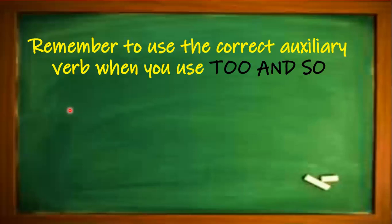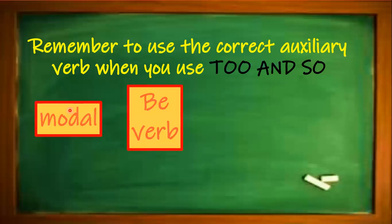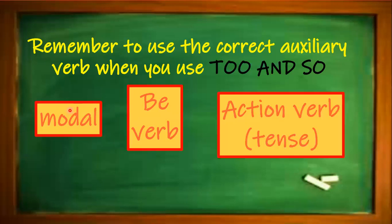Pay attention here — remember to use the correct auxiliary verb when you use too or so. For example, if the speaker uses a modal verb, you have to use the same modal verb. If the speaker uses the verb to be, you have to use the verb to be. If the speaker uses an action verb, you have to pay attention and be careful with the tense the speaker is using.